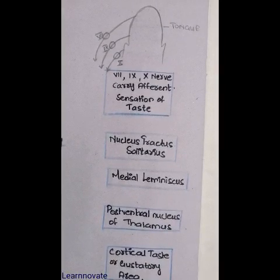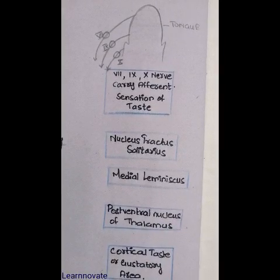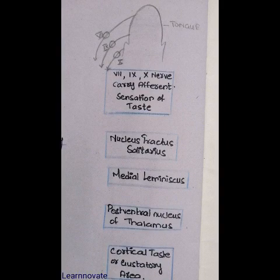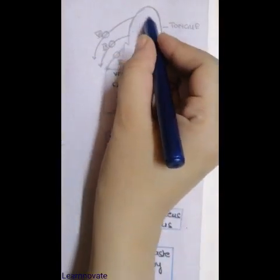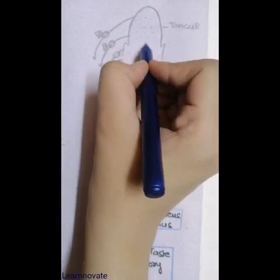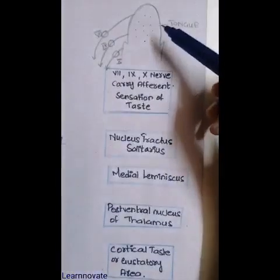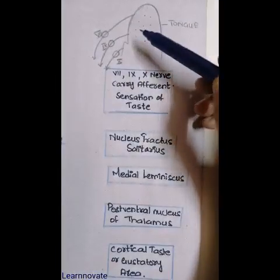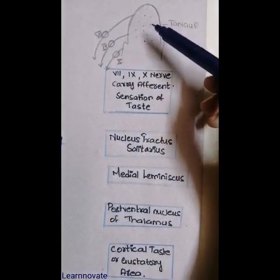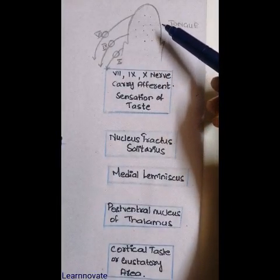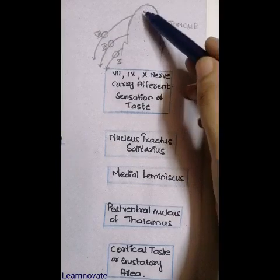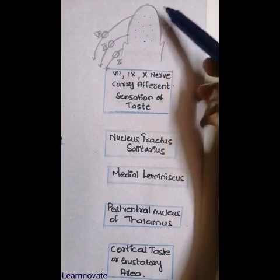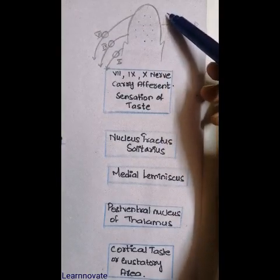First, the sense of taste develops in the tongue and is carried primarily by the taste buds, which are minute papillae-like projections in the tongue. These taste buds are specialized for four major types of primary taste sensation: sweet, salt, sour, and bitter.